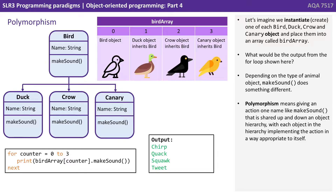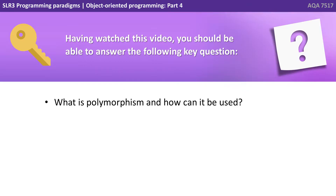Polymorphism means giving an action one name — like make sound — that is shared up and down an object hierarchy, with each object in the hierarchy implementing the action in a way appropriate to itself. Having watched this video, you should be able to answer the following key question: what is polymorphism and how can it be used?